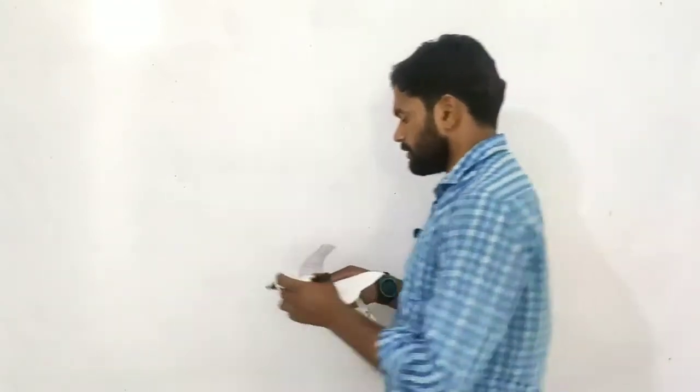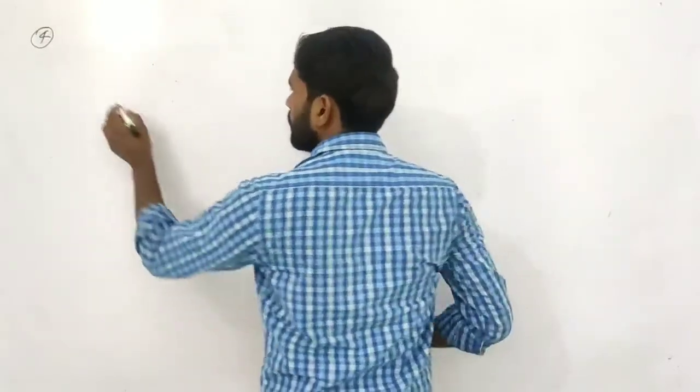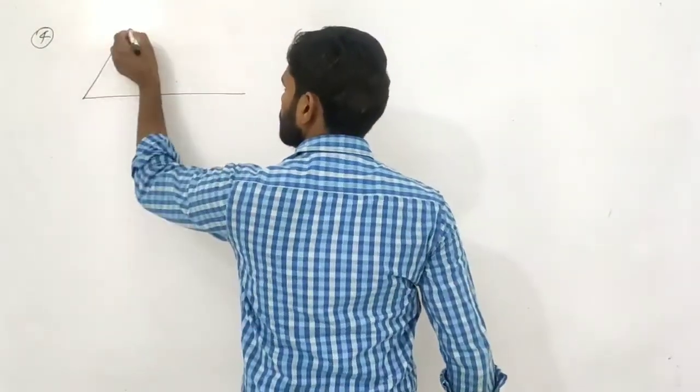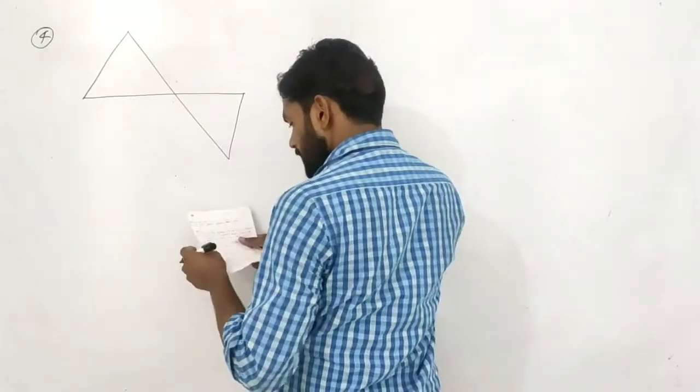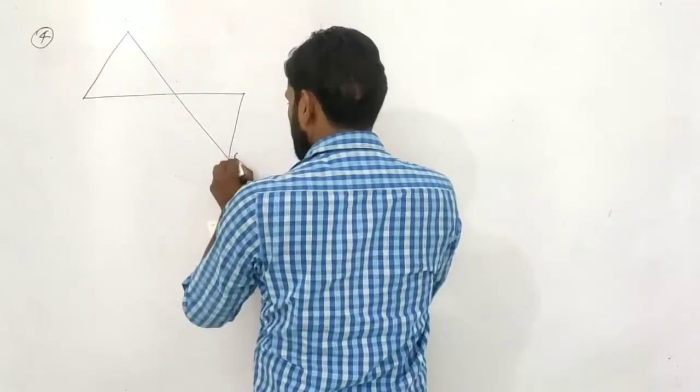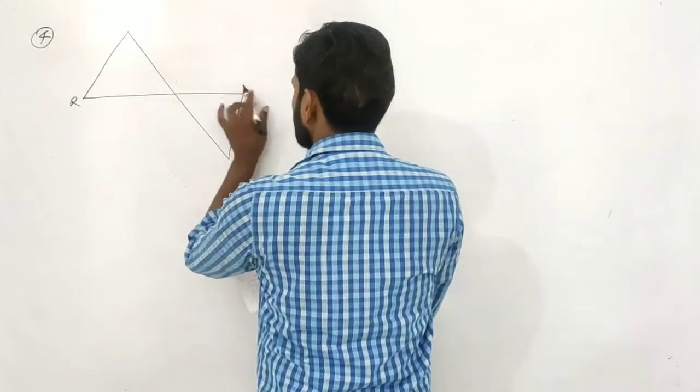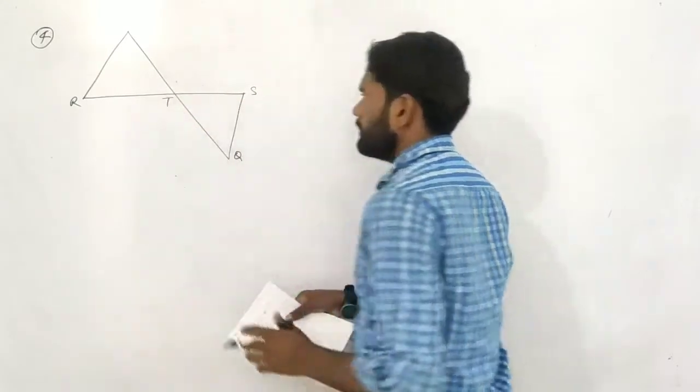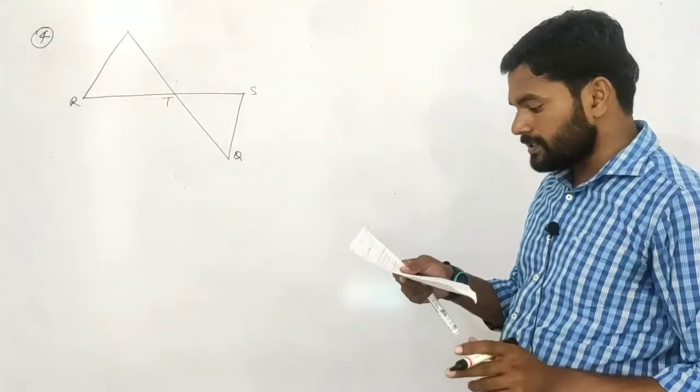So the given 4th question is: a structure is given which is like this, and the name of vertices are P, Q, R, T, S, T. Clear? And in this structure some things are given.